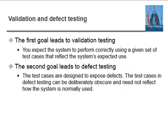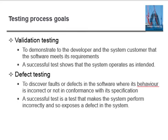The first goal is validation testing: you expect the system to perform correctly using a given set of test cases that reflect the system's expected use. The second goal leads to defect testing: test cases are designed to expose defects. Test cases in defect testing can be deliberately obscure and need not reflect how the system is normally used. For validation testing, the goal is to demonstrate to the developer and the system customer that the software meets its requirements. A successful test shows the system operates as intended.